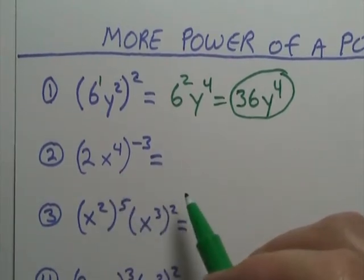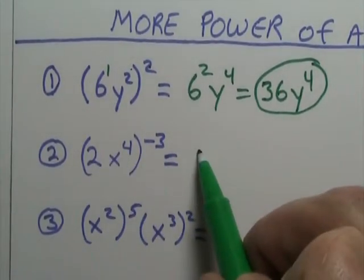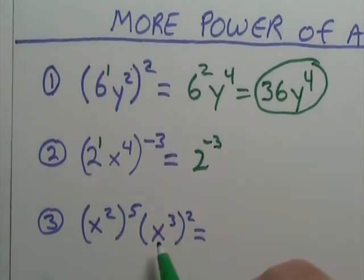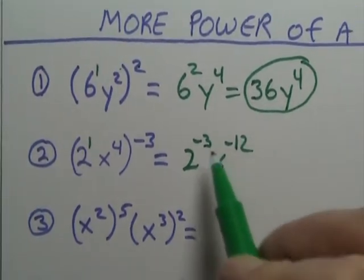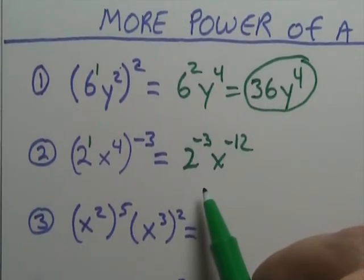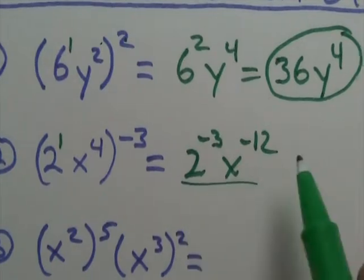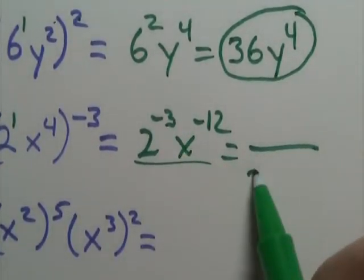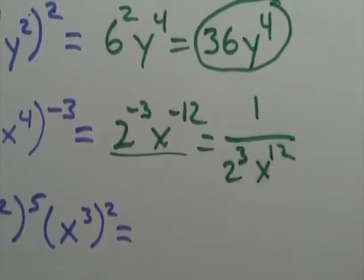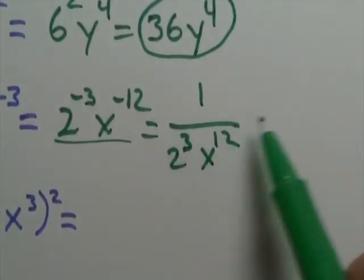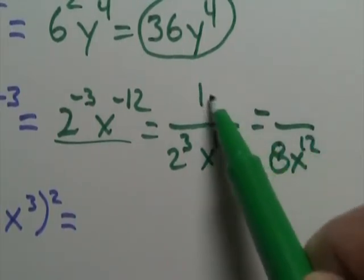On number 2, that's going to be 2 to the negative 3 power, because that's like a 1 right there. Then we have x to the negative 3 times 4, that's negative 12. And all these are negative, so you have to cross the bar. So that's going to leave me with 2 to the 3rd on the bottom, x to the 12 on the bottom, and a 1 up on top. 2 to the 3rd — that's 2 times 2 times 2 — that's 8. So that's going to be 8, x to the 12, and a 1.